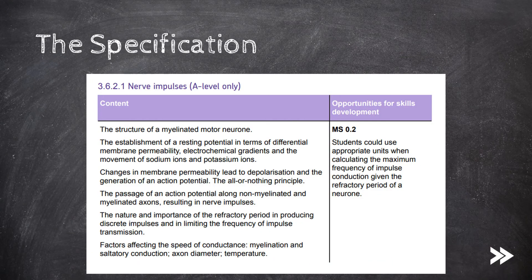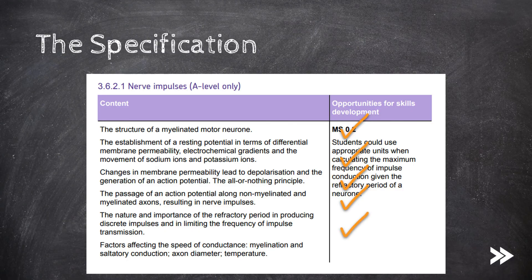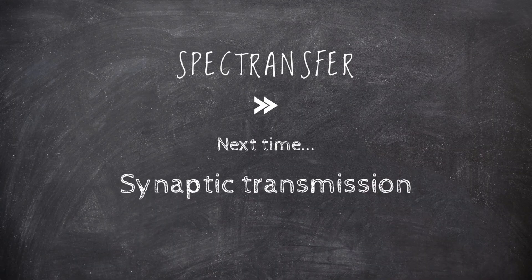That would be this part of the specification covered. We have covered the structure of a myelinated motor neuron, how a resting potential is established, and how changes in permeability lead to depolarization and the generation of an action potential. We have also considered the all-or-nothing principle, how action potentials travel along non-myelinated and myelinated axons resulting in nerve impulses, the importance of the refractory period in producing discrete impulses and in limiting the frequency of impulse transmission, and finally the factors that affect the speed of conductance. That would be it for now guys, thanks for watching, please subscribe and comment — next time we will be covering synaptic transmission.